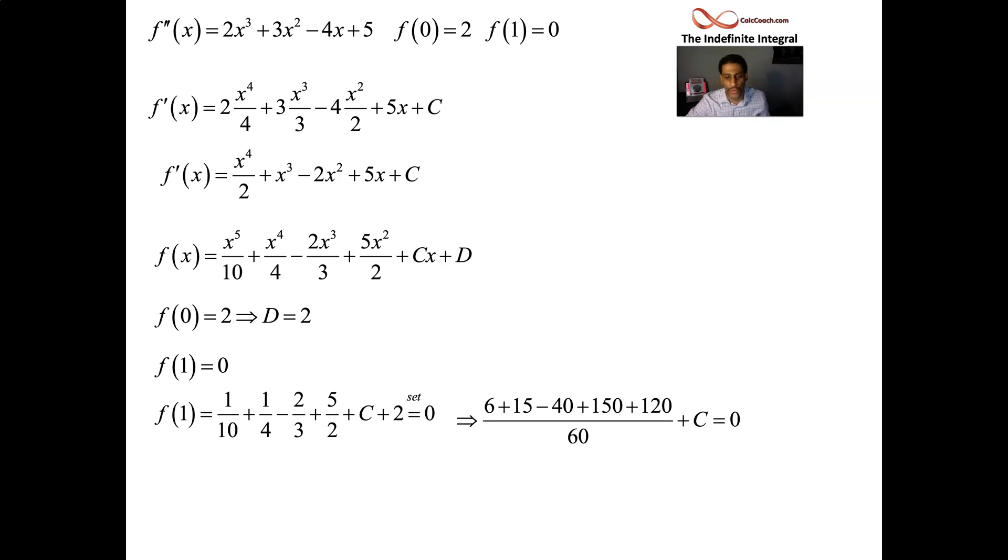Plus the 2. We got the 2 in there too as well. Put that all together. Ends up as 251 over 60. Move it to the other side. C equals that fraction. Negative 251 over 60.